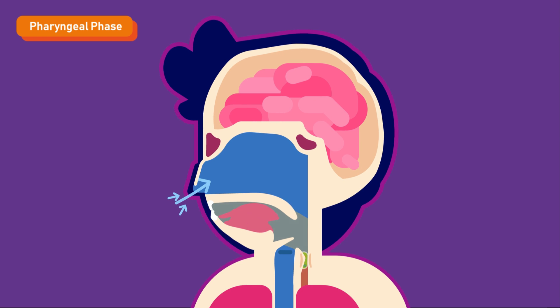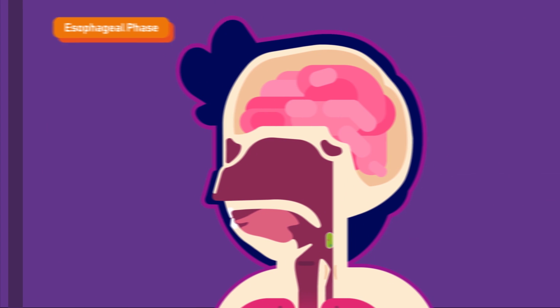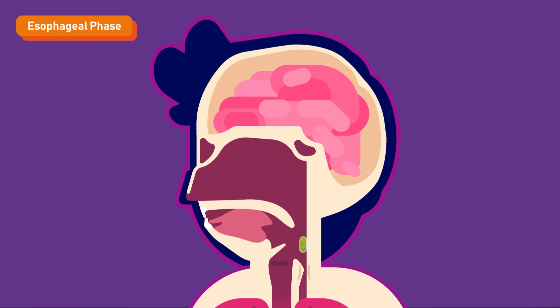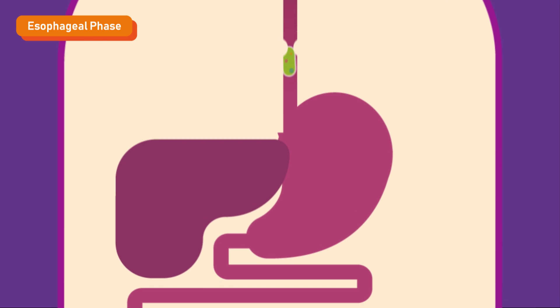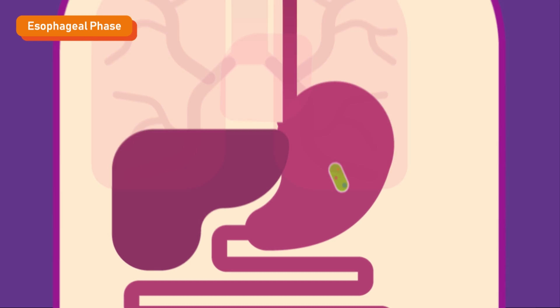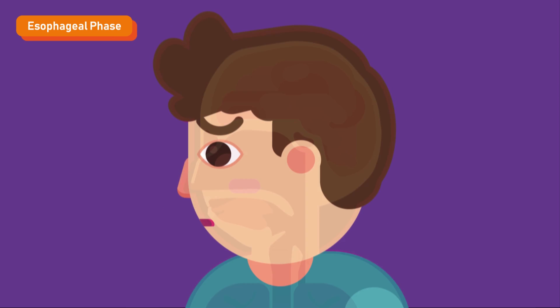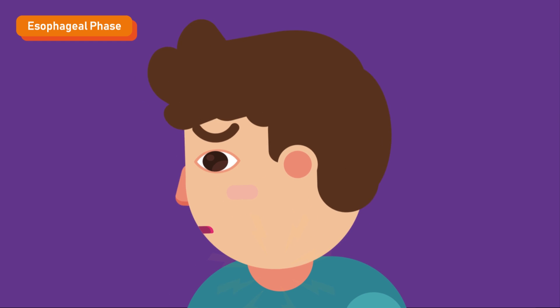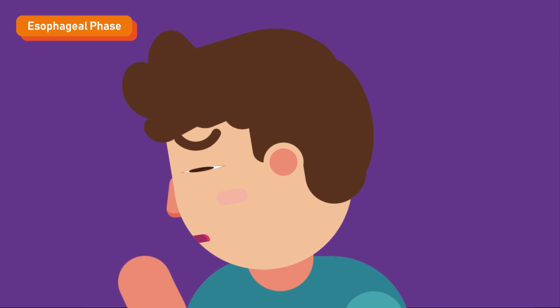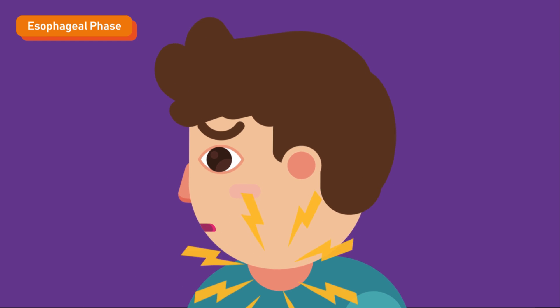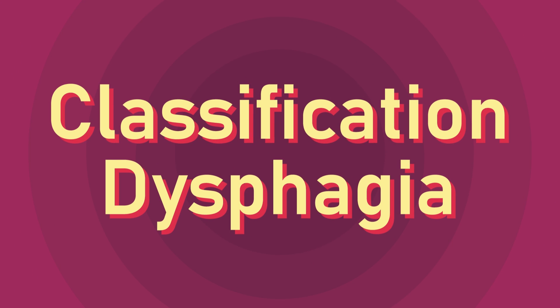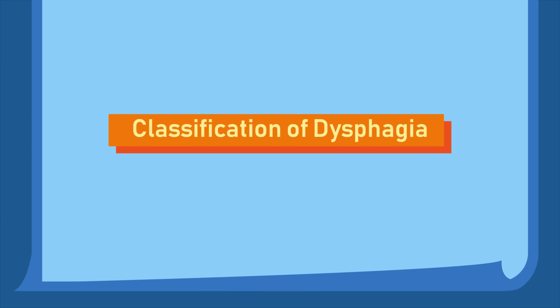The esophageal phase, in which food passes down the esophagus via peristalsis into the stomach. A disruption in any one of these phases could result in dysphagia, and difficulty in the pharyngeal phase especially could lead to aspiration.